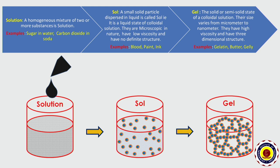What is a solution? A solution is a homogeneous mixture of two or more substances. Here are some examples: sugar in water, carbon dioxide in soda.